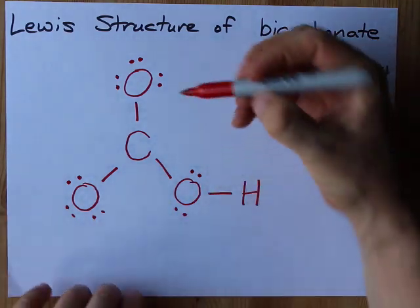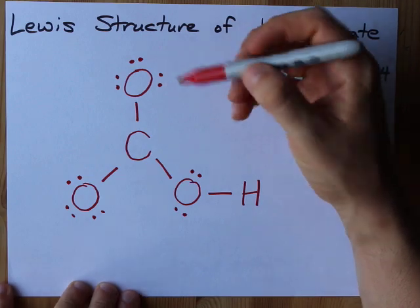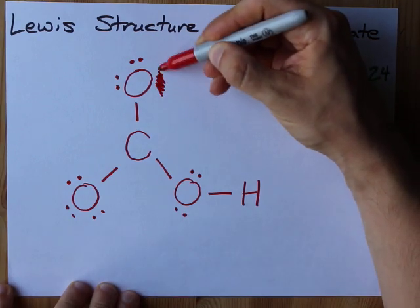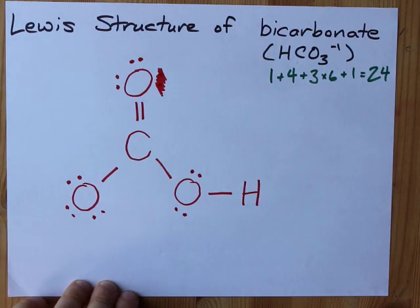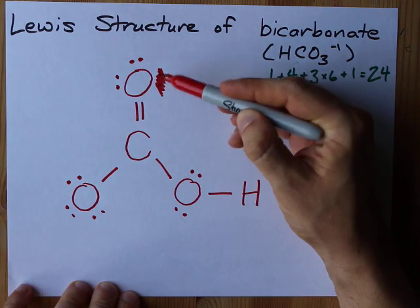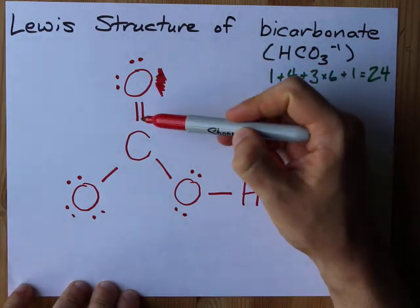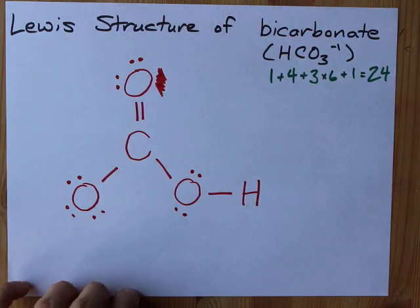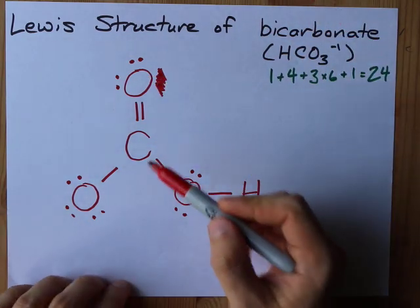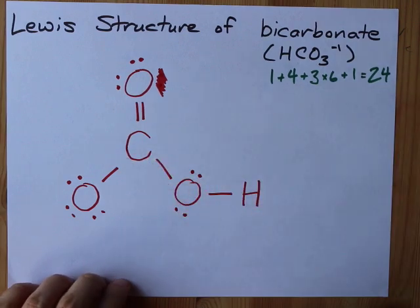The way you're going to do it is to take a lone pair from one of the other oxygens and eliminate it, and then create a double bond instead. So you've taken those two electrons. They still belong to the oxygen, but now they are shared with that carbon atom. Now that carbon has eight electrons. Great.